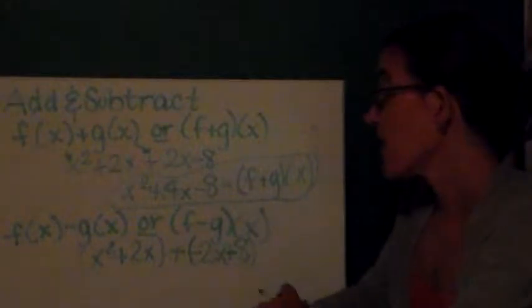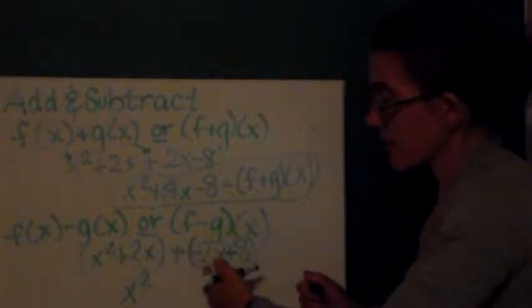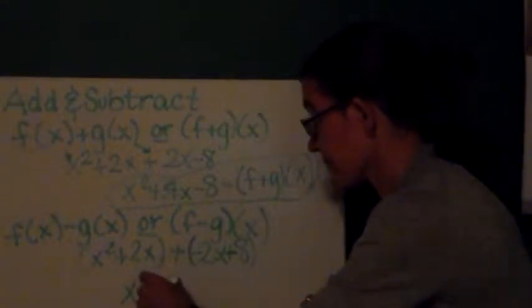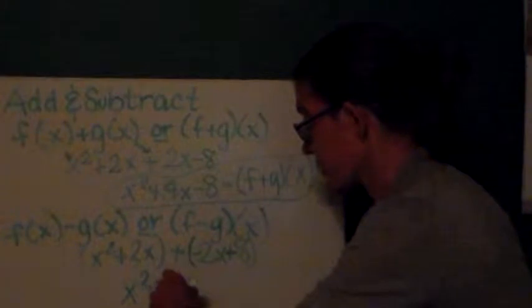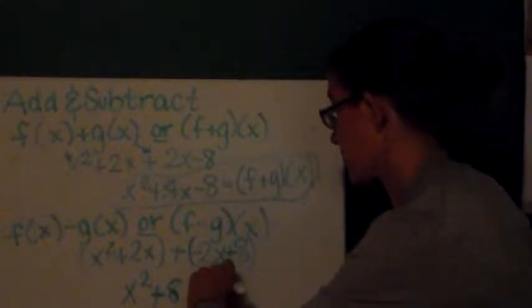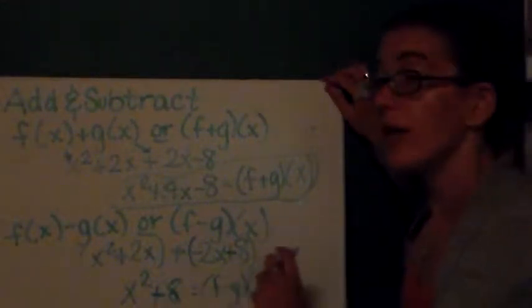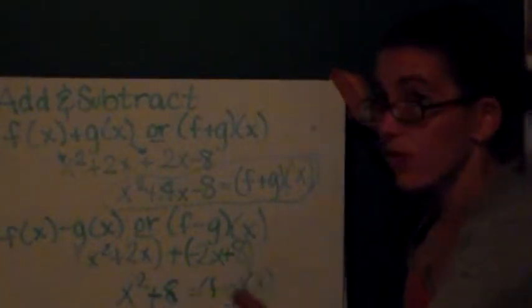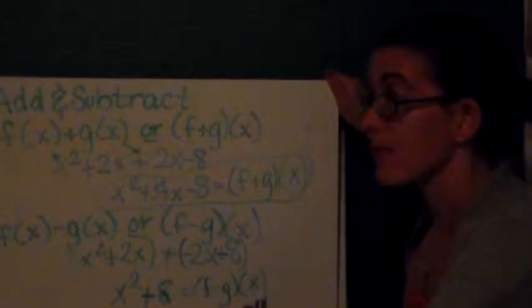Now, I'm back to the same story. I'm just combining like terms. x² doesn't have anything. 2x and negative 2x, well, those add up to 0. So, now I have x² + 8. This is (f-g)(x). Just like with real numbers, with polynomial functions and all other functions, the order matters. So, f(x) - g(x) is different from g(x) - f(x).